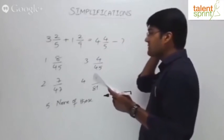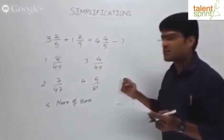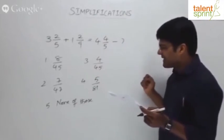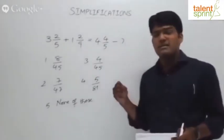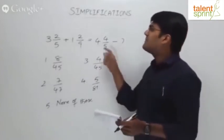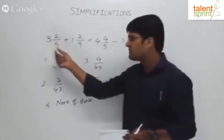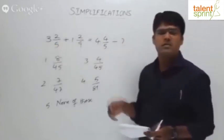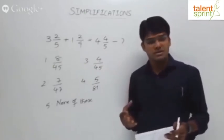3 and 2/5 plus 1 and 2/9 equals 4 and 4/5 minus question mark. The answer options are 8/45, 7/47, 4/45, 5/81, and none of these. Let's quickly look at the solution. These are mixed fractions — an integer with a fractional part.